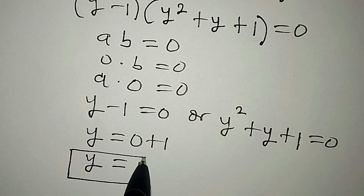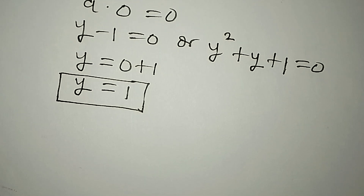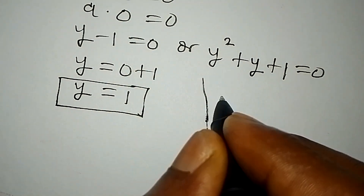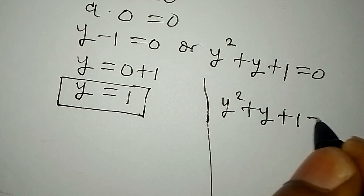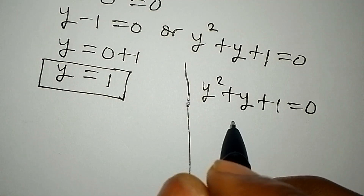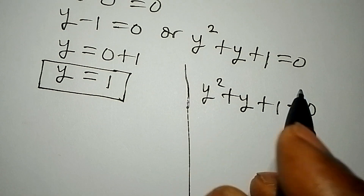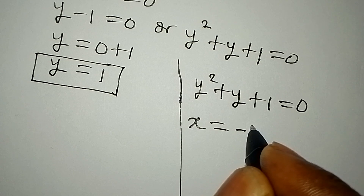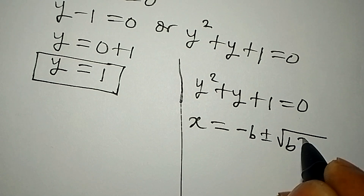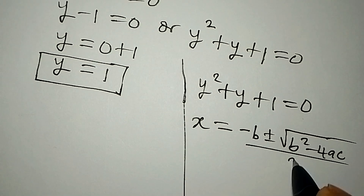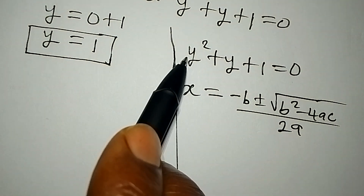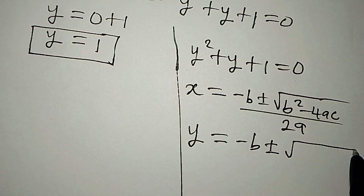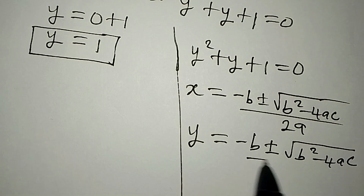This is the first solution to the equation. To get the other values of y, we work on y squared plus y plus 1 equals 0. We'll use the quadratic formula: y equals minus b plus or minus square root of b squared minus 4ac, all over 2a.